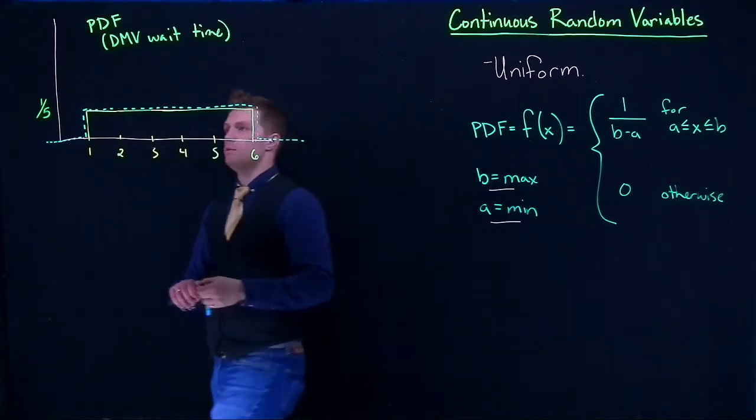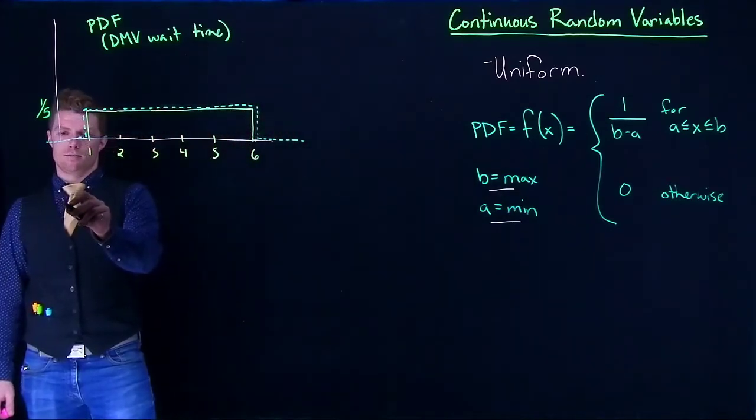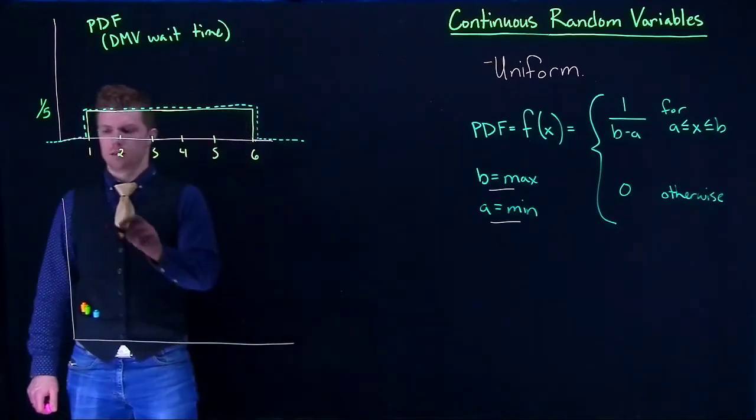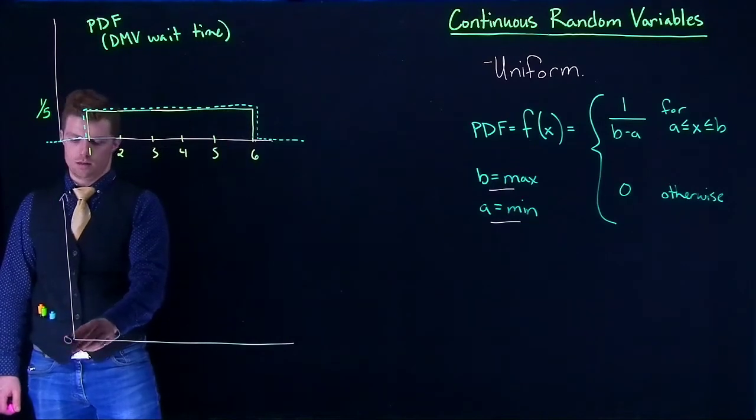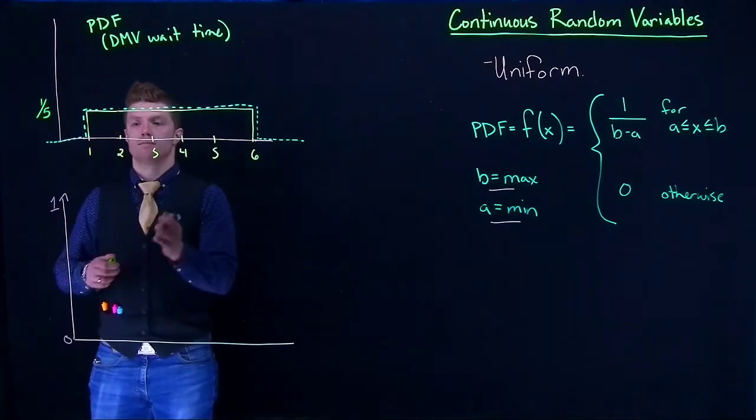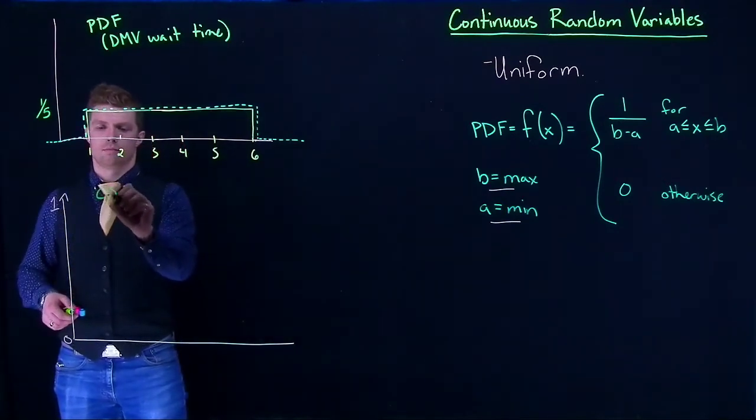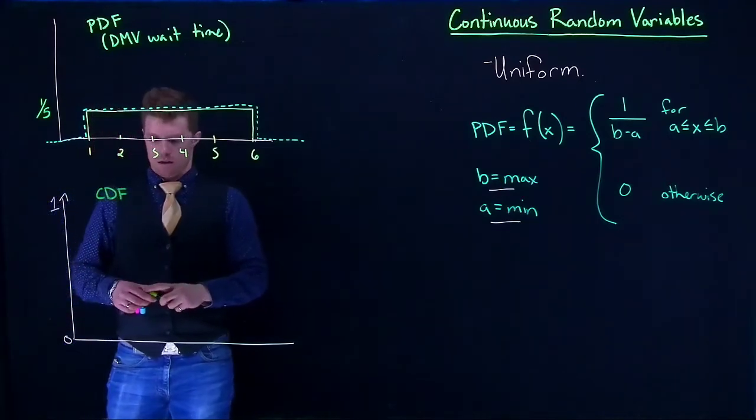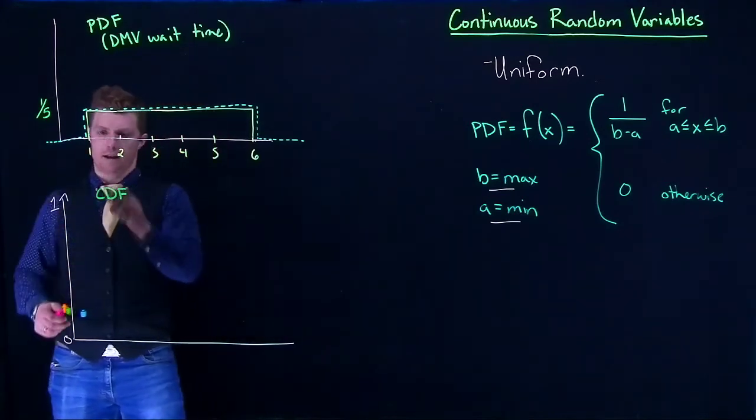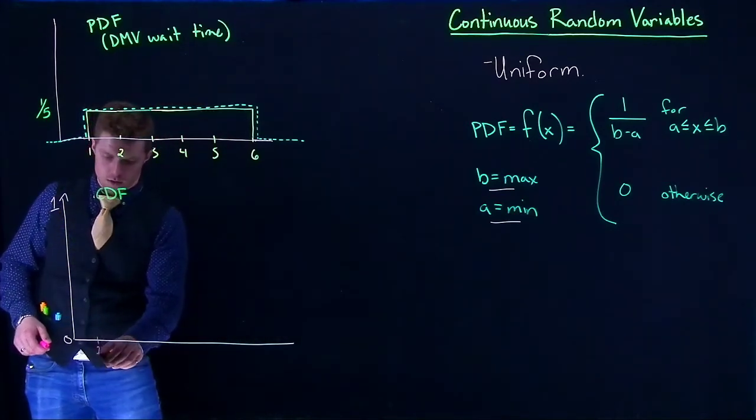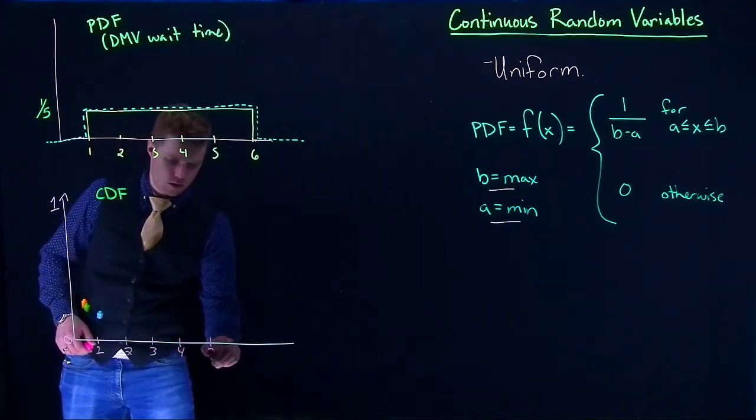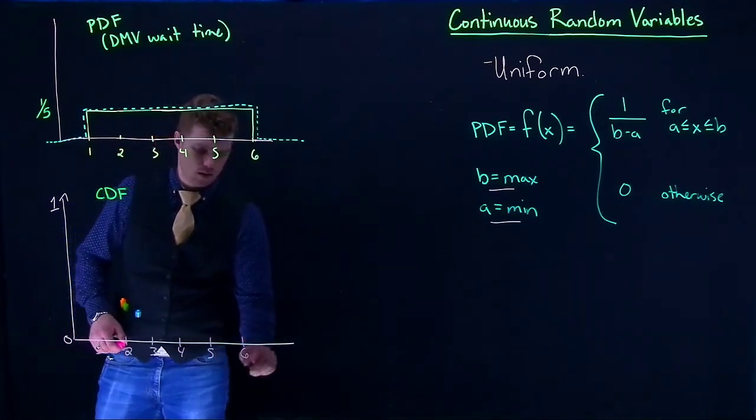So let me show you what this guy looks like. Here is our CDF. We'll go from zero to one, and we'll put up the same times that we've got, so the same scale on our X. We've got one, two, three, four, five, and six.